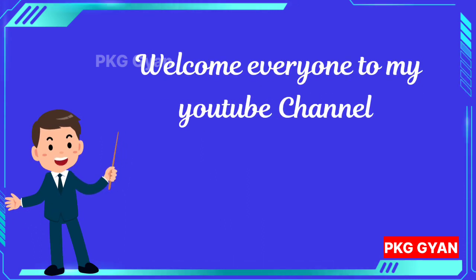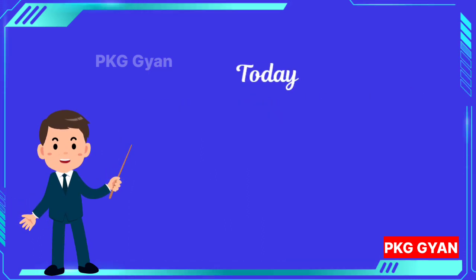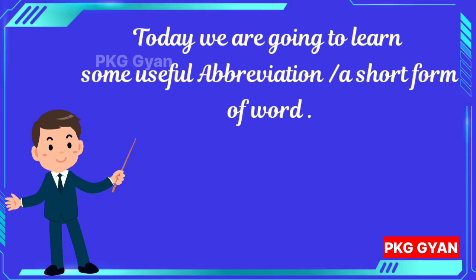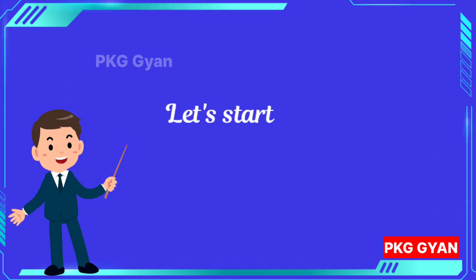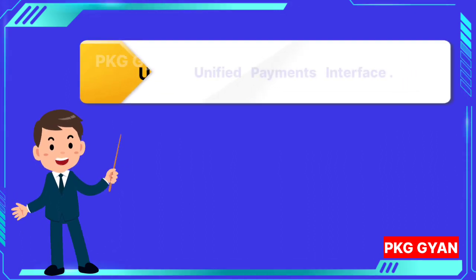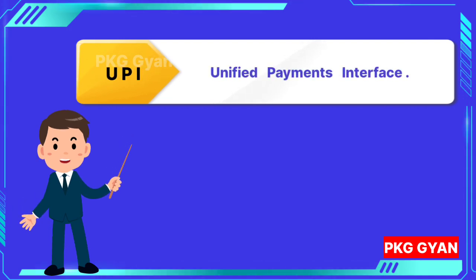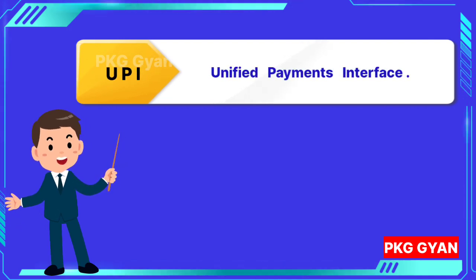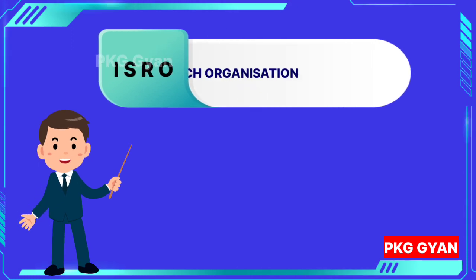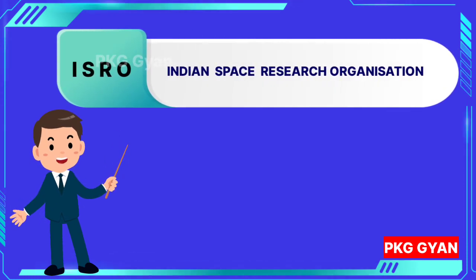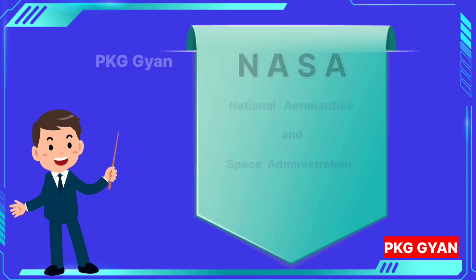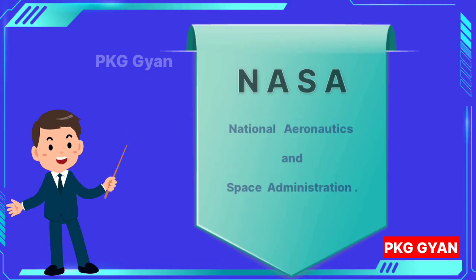Welcome everyone to my YouTube channel. Today we are going to learn some useful abbreviations or short forms of words. Let's start. First one is UPI: Unified Payments Interface. Next, ISRO: Indian Space Research Organization. NASA: National Aeronautics and Space Administration.